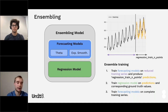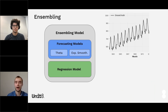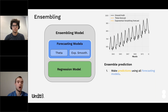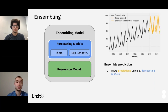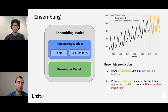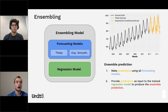Now that the model is fully fitted, prediction is done in two steps. First, all forecasting models predict the next points in the forecasting horizon as normal — this gives us forecasts for the validation period, shown in yellow. Second, the regression model takes all the yellow forecasts as input and produces the final assembled forecast as output, shown in red. That is our final ensembling output.